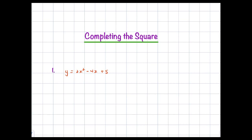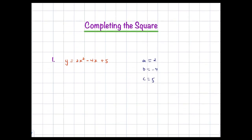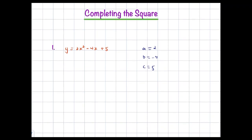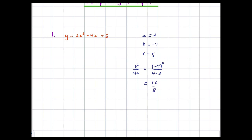We have y = 2x² − 4x + 5. So our a value is 2, our b value is negative 4, and the c value is 5, although we don't really care about that — we're just interested in b and a, because the sneaky zero term b²/4a that we're going to be adding and subtracting is completely determined by b and a. So this is (−4)² / (4 × 2), which is 16/8, which is 2. So we are going to be adding and subtracting 2 from this equation.